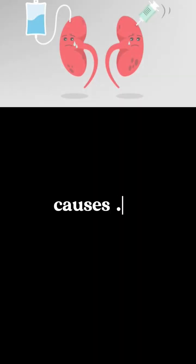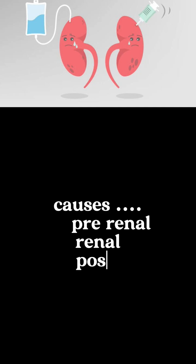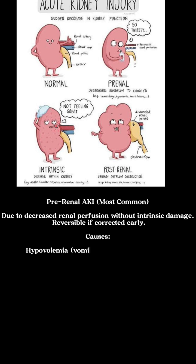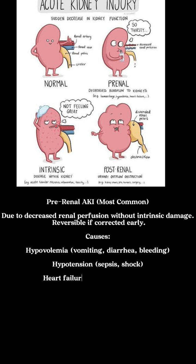The causes follow a 3R divide formula: pre-renal, renal, and post-renal. Pre-renal refers to decreased renal perfusion without any renal damage. Causes include hypovolemia, hypotension, heart failure, and NSAID use.